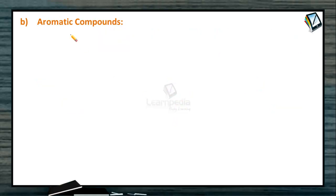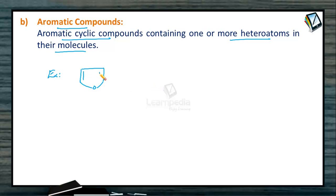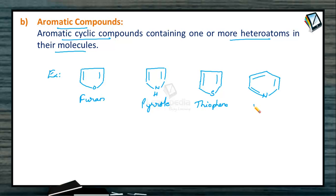The second type under heterocyclic compounds is aromatic heterocyclic compounds. These are aromatic cyclic compounds containing one or more hetero atoms such as nitrogen or oxygen in their molecules. They are aromatic in nature and are called aromatic heterocyclic compounds. Common examples are furan, pyrrole, thiophene, and pyridine.